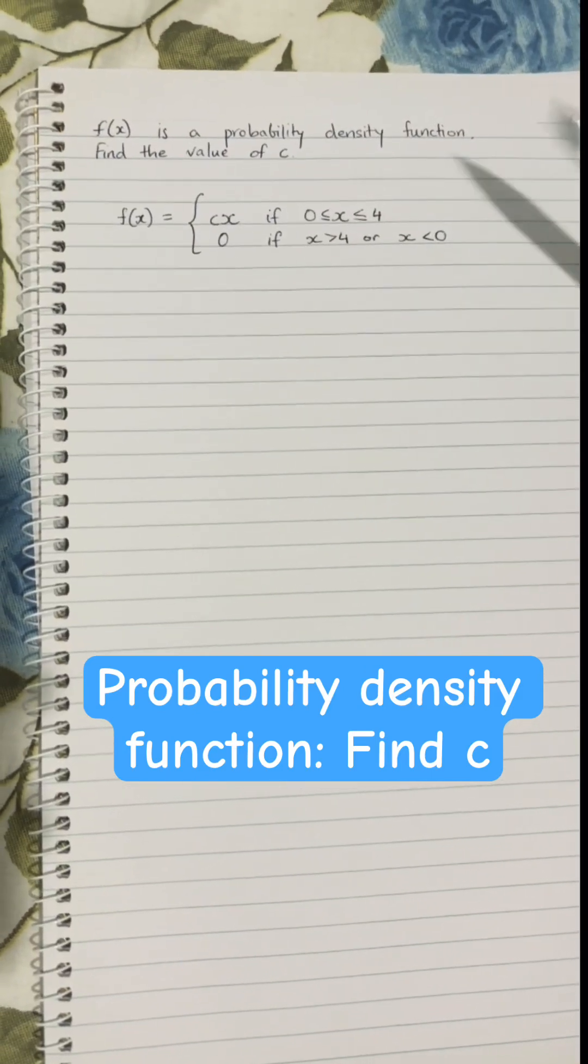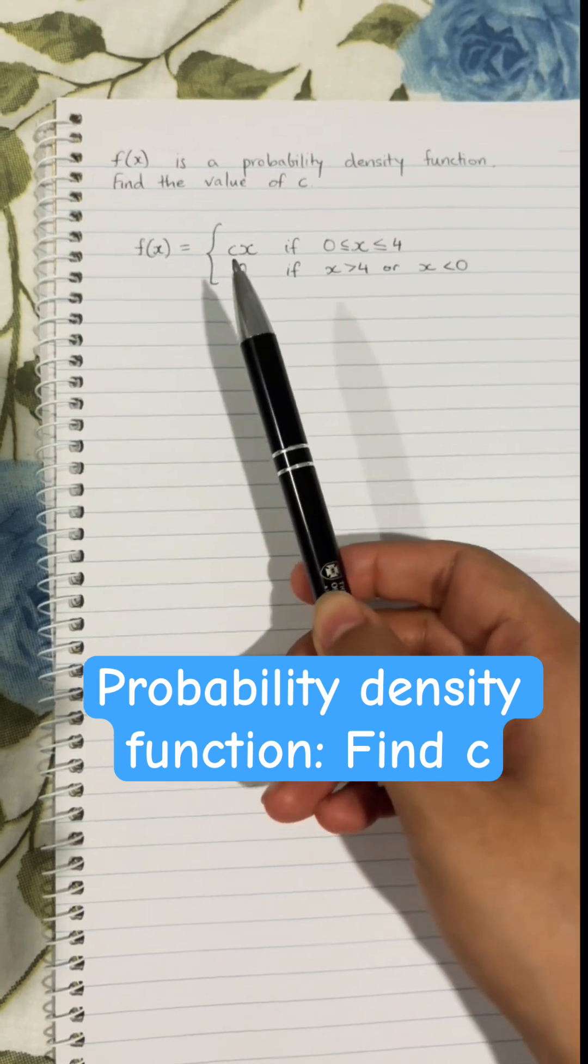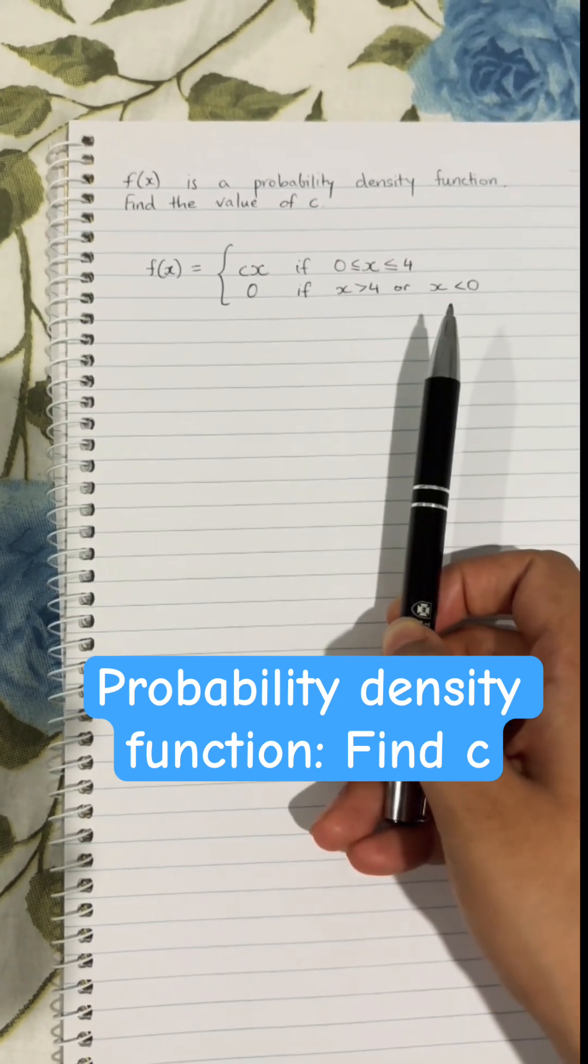f of x is a probability density function. Find the value of c. So for f of x equals cx if x is between 0 and 4, and 0 if x is greater than 4 or less than 0.